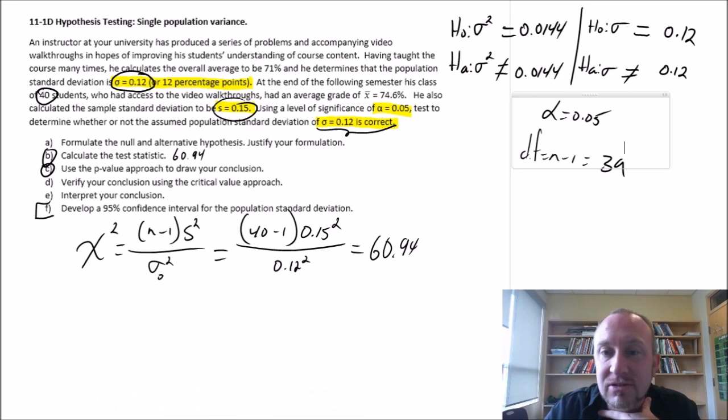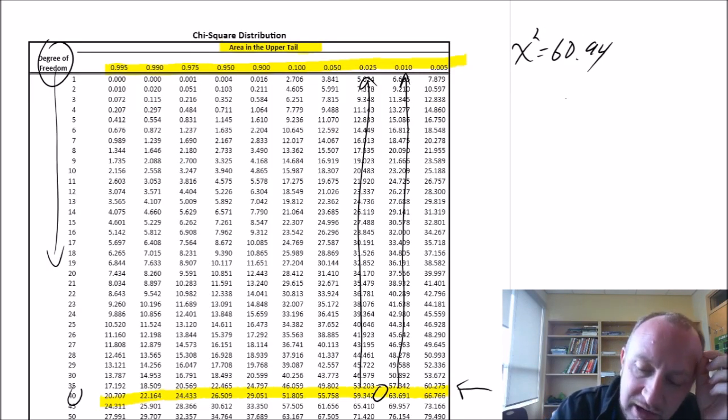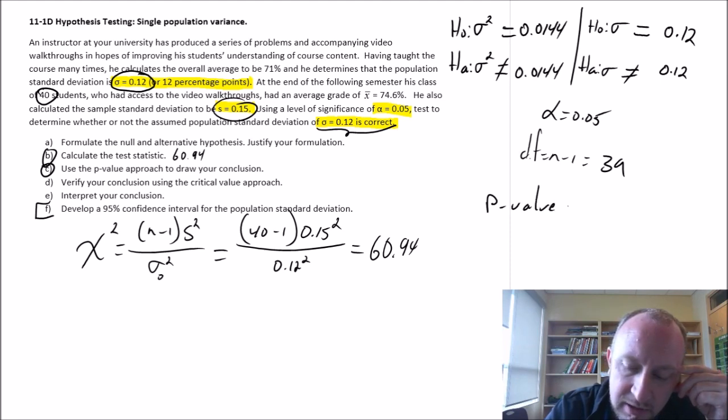Now is that our p-value? Again, when we're doing two tailed tests as we're doing here, we always have to multiply that probability by 2. That rule is the same whether it's a test on means, proportions, or here variances. We always have to multiply the probability by 2 in order to obtain our p-value. So our p-value then is going to be between 0.01 divided by 2 and 0.025 divided by 2. So it's going to be p-value will be less than 0.05 greater than 0.02. So there's our final result.